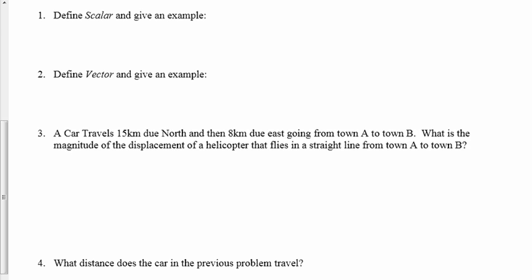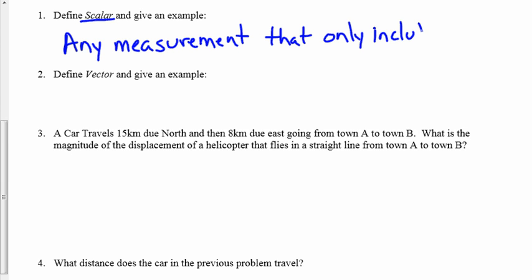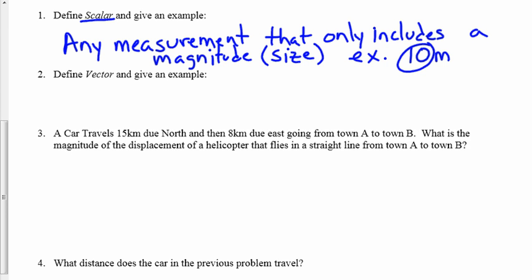So now when we measure things, there are two different types of measurements that we can talk about. The first being a scalar. Now the term scalar refers to any measurement that only includes a magnitude, or in other words, size. So for example, we might say ten meters. This is our magnitude and this is our unit.